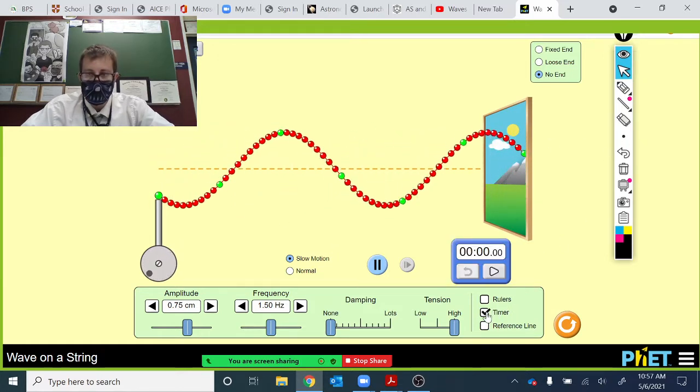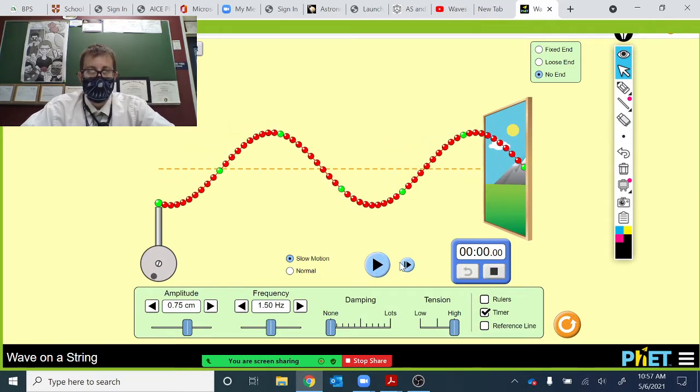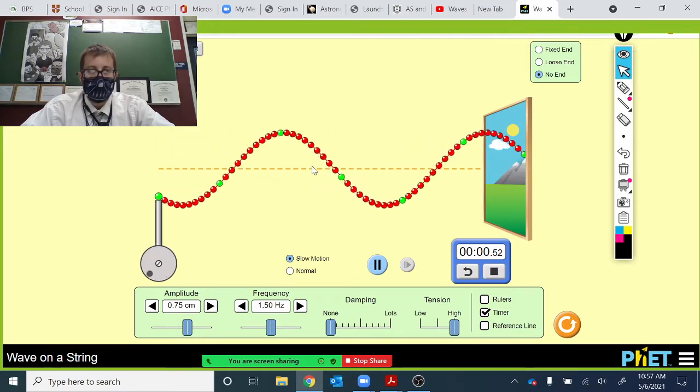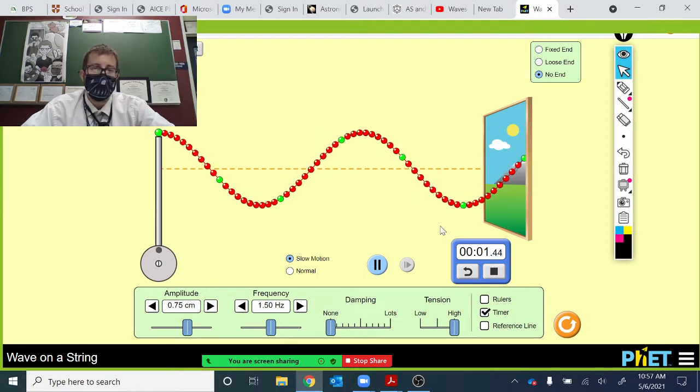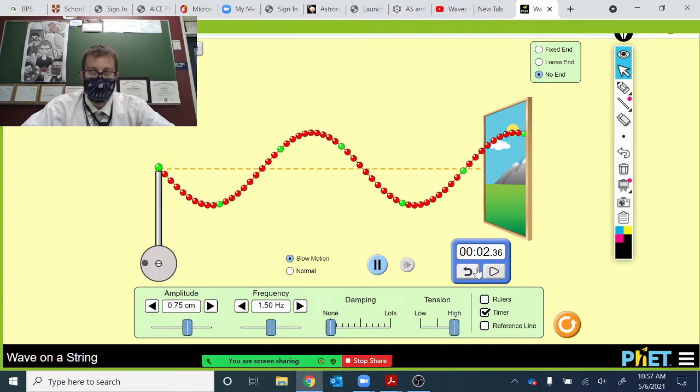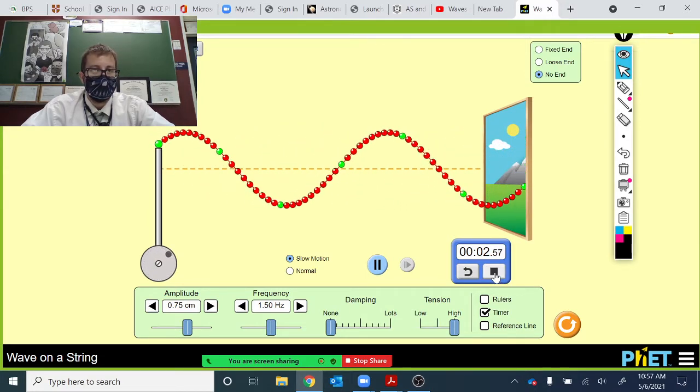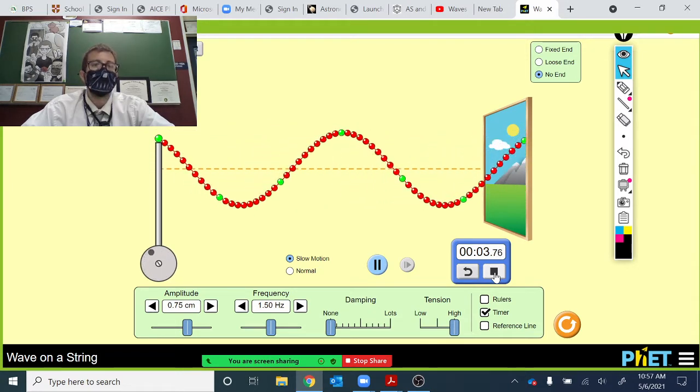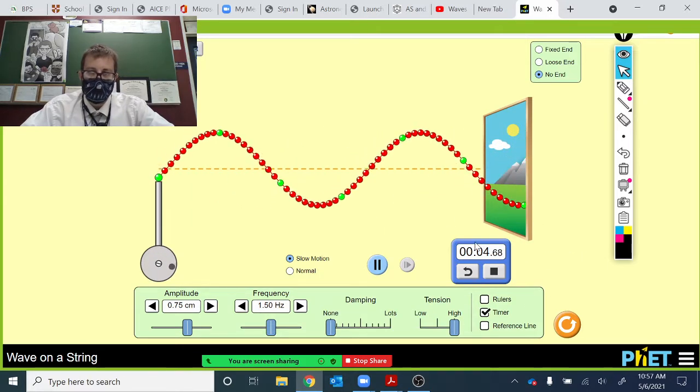One of the tools that we get here is a timer. If we wanted to start the timer and as the wave propagates, we could count how many waves per second. That would be the frequency. Start the wave right there. One and a half, two waves.